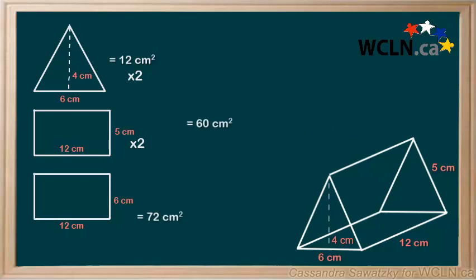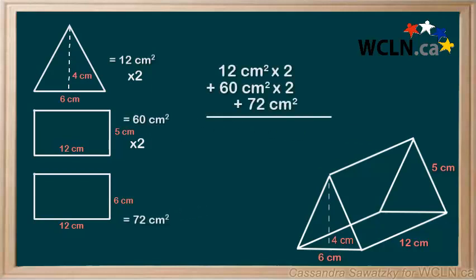So that's all of our surfaces, so let's add them up. We add it up to find our total surface area of 216 centimeters squared.